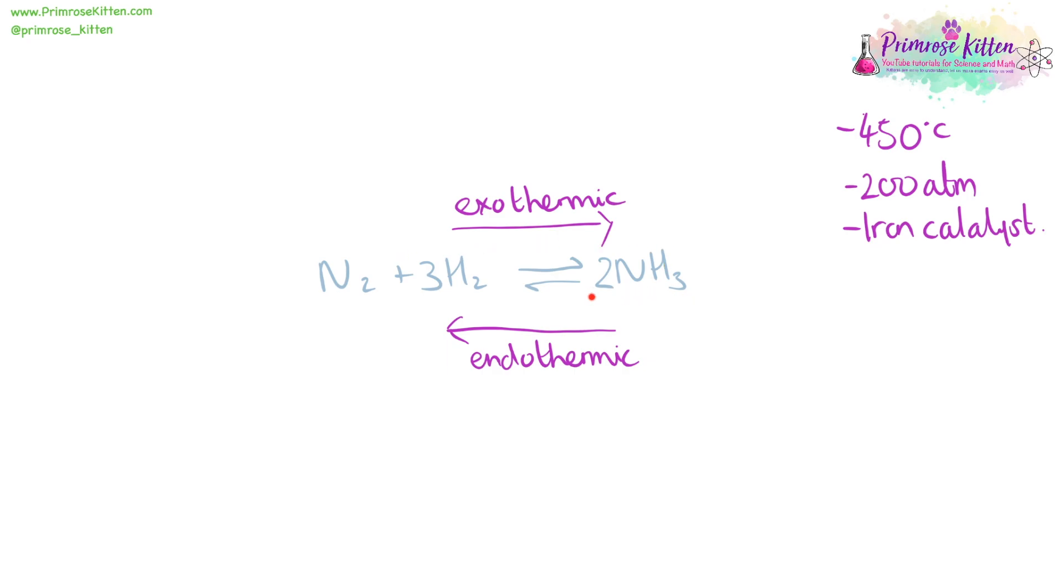There are less moles of product than there are moles of reactant. There are four over this side and two over this side. So high pressures of 200 atmospheres are going to drive the forward reaction because this is going to take up less space. There are less moles of it. A higher pressure would increase the rate of the forward reaction even more, but it would be dangerous because high pressure leads to risk of explosion. So 200 atmospheres is used because it is a relatively safe pressure to do it with.